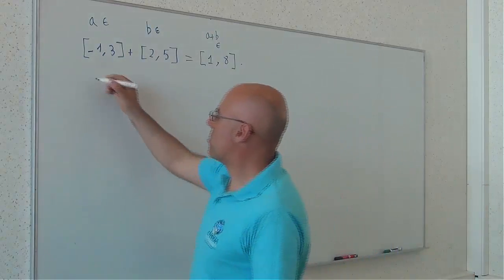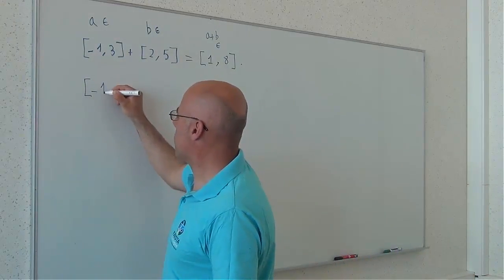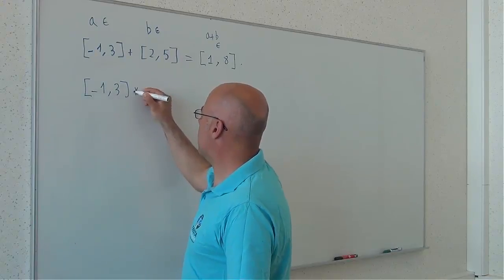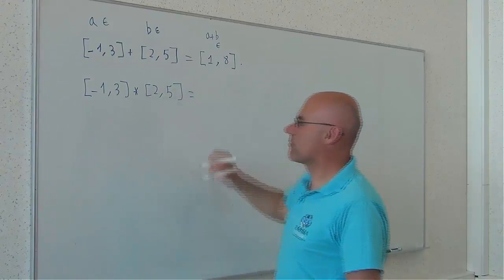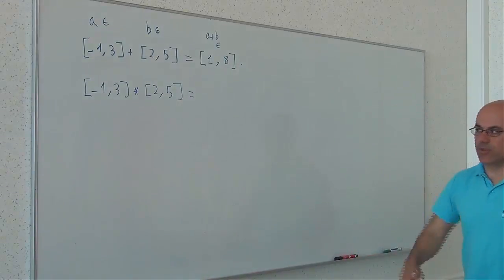Now consider the multiplication. Minus 1, 3 times 2, 5. How can I compute this multiplication?